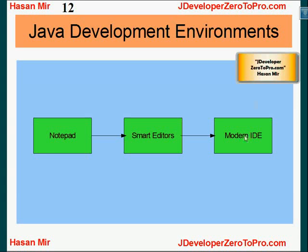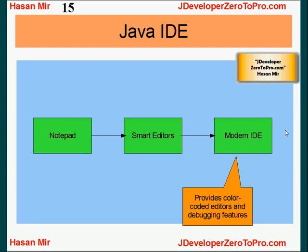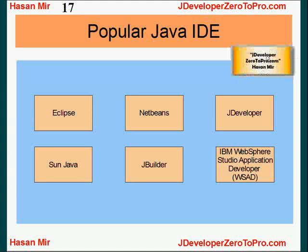The last generation was modern Integrated Development Environments. IDEs are basically a one-stop shop for all development requirements. They not only provide smart editors, they also integrate well with the compiler and application server. These modern IDEs provide color-coded editors and very powerful debugging features. Popular IDEs today include Eclipse, NetBeans, JDeveloper from Oracle, Sun Java Studio from Sun, JBuilder from Borland, and IBM's WSAD — WebSphere Studio Application Developer. All these vendor-specific IDEs are known to integrate well with other products from their respective vendors. For example, JDeveloper integrates well with Oracle Database and Oracle E-Business Suite.